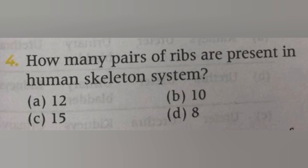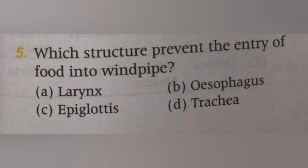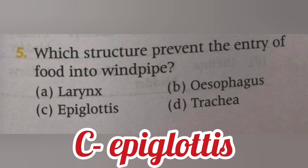Next, which structure prevents the entry of food into the wind pipe? Options: A. Esophagus, B. Epiglottis, C. Trachea. The answer is B, epiglottis. The epiglottis is a thin flap-like structure which prevents the entry of food into the wind pipe.